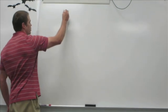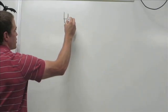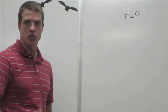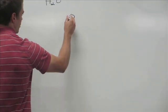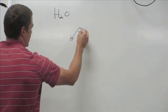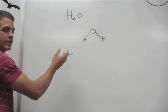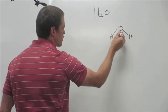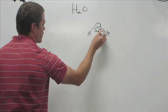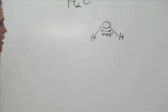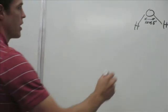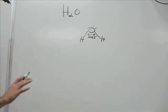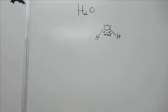First, let's talk about water. The molecular formula for water is H₂O — two hydrogens and one oxygen. If we draw the structure, we know it looks like Mickey Mouse, right? The bond angle is about 104.5 degrees. Why is the water molecule bent like that? It's because there are lone pair electrons right here on the oxygen.